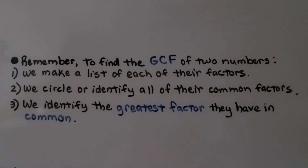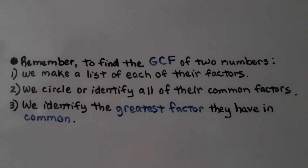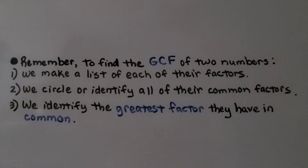To summarize finding the GCF of two numbers: one, make a list of each of their factors. Two, circle or identify all of their common factors. Three, identify the greatest factor they have in common.